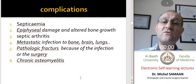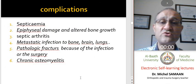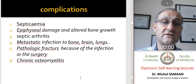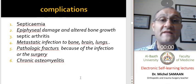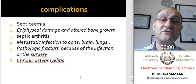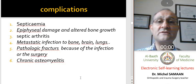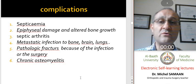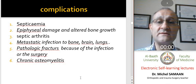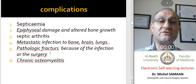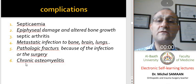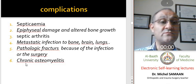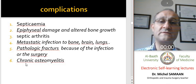The complications of acute septic osteomyelitis are numerous, including septicemia, epiphyseal damage especially in children, metastatic infection to remote sites, pathological fractures due to bone weakness, and the development of chronic osteomyelitis, which is a very important concern.